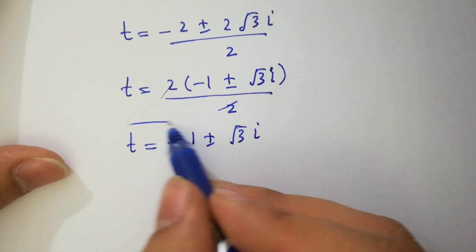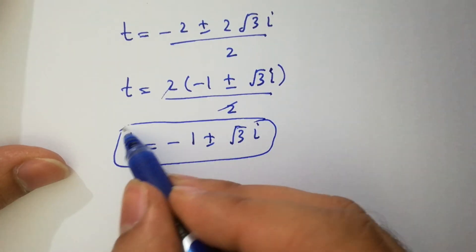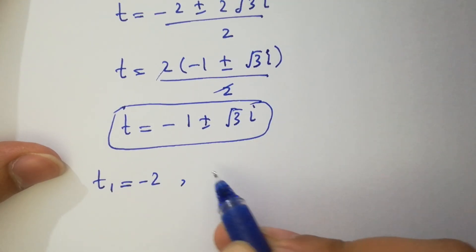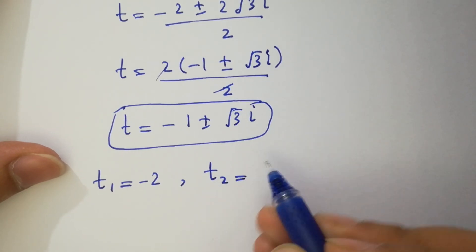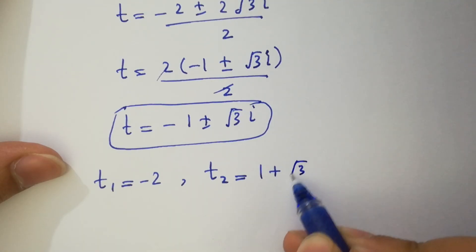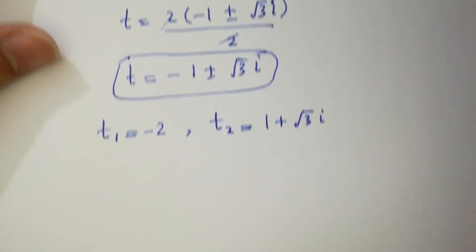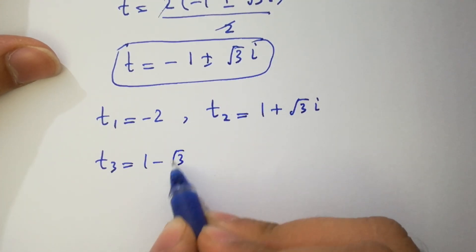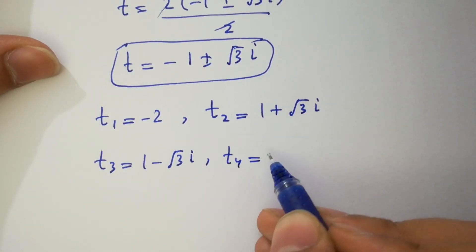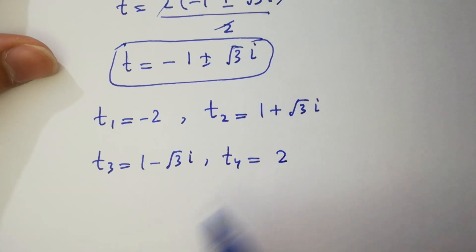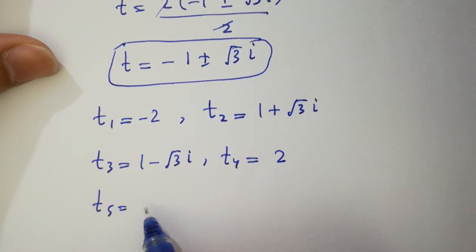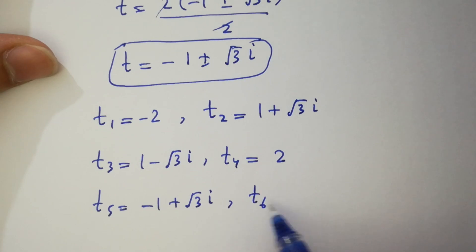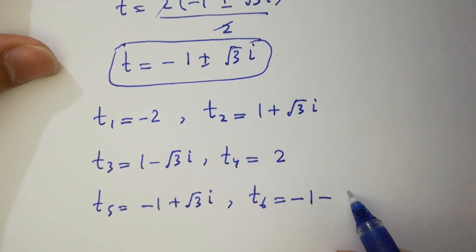So this is also a complex solution. Finally, we have 6 solutions: t₁ = −2, t₂ = 1 + √3·i, t₃ = 1 − √3·i, t₄ = 2, t₅ = −1 + √3·i, and t₆ = −1 − √3·i.